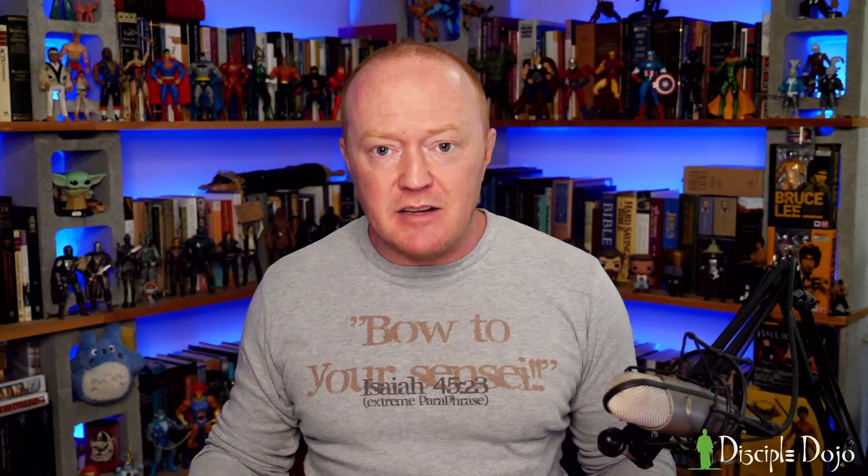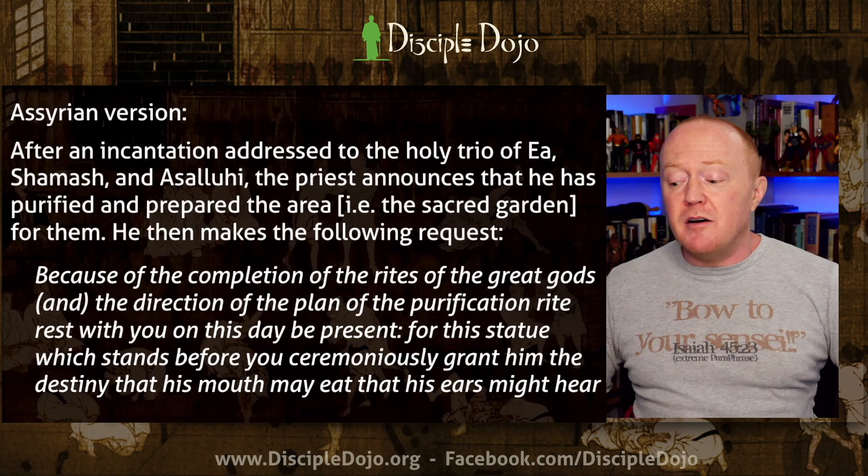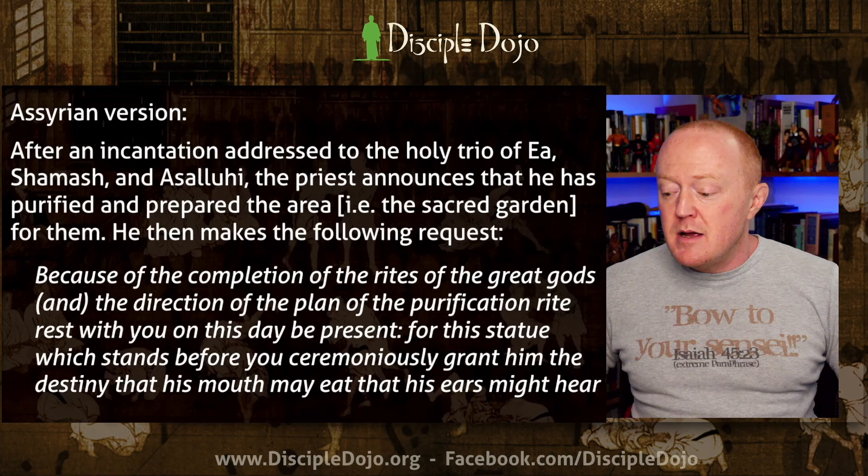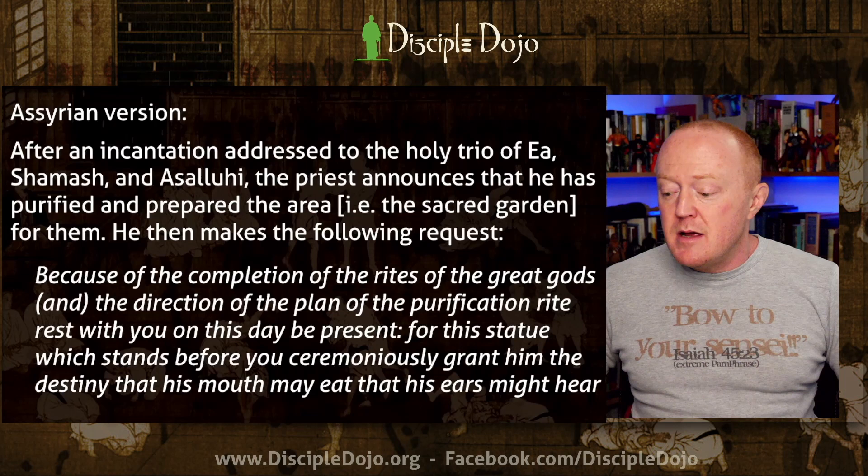Once the image was carved and ready, it needed to be filled with the essence of the god — different gods invoked in Syrian, Babylonian, or Egyptian contexts, because gods in the ancient near east were geographically limited. There was not one god overall; that would have been crazy to an ancient mind. There were gods of Egypt, Mesopotamia, the Hittites — different gods, different regions. Here is the Assyrian version: after an incantation addressed to the holy trio of Ea, Shamash, and Asaluhi, the priest announces he has purified the sacred garden for them.